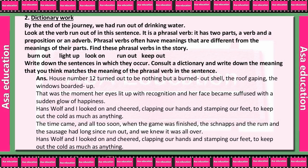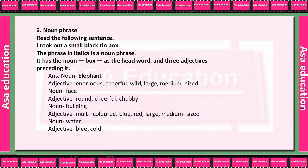Now, noun phrases. Read the sentence: 'I took out a small black tin box.' The phrase in italics is a noun phrase. It has a noun — box — plus three adjectives: small, black, tin. For example: noun 'elephant' with adjective, maximum adjectives — enormous cheerful face, round cheerful chubby building, multi-colored, blue red medium-sized water.